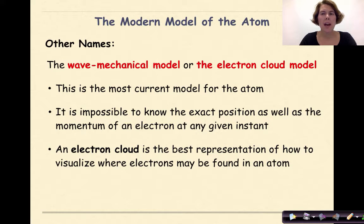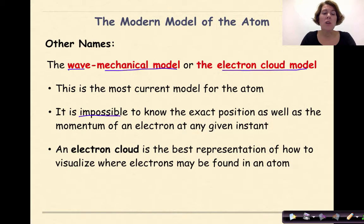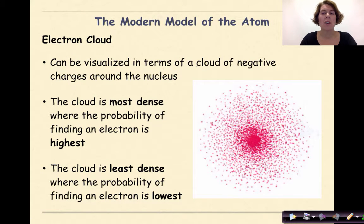The modern model of the atom, otherwise known as the wave mechanical model or the electron cloud model, is the most current model for the atom. It is impossible to know the exact position as well as the momentum of an electron at any given instant — they're small, they're fast. An electron cloud is the best representation of how to visualize where electrons may be found. The cloud is most dense where the probability of finding an electron is highest, and least dense where the probability is lowest.